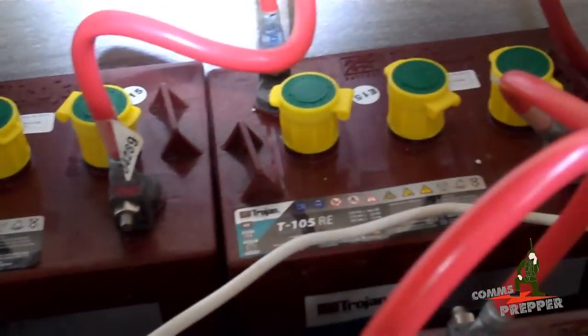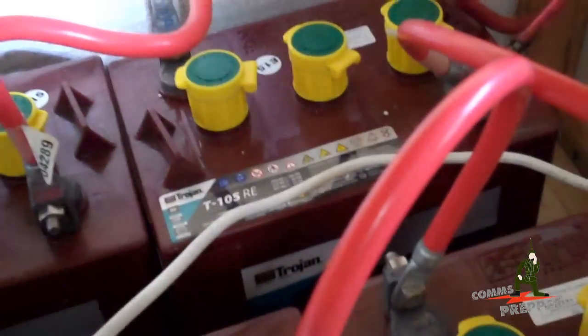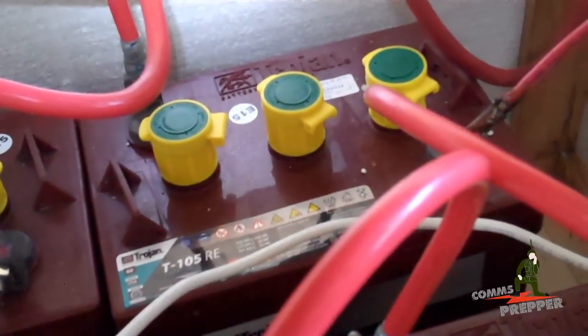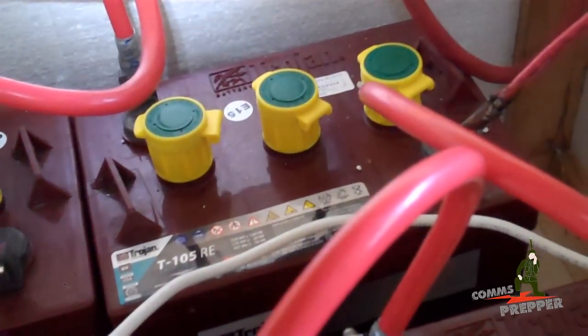Alright guys, I'm in the battery box and things are looking good. For those of you who don't follow the channel, what I have here are four Trojan T-105RE lead acid batteries. They're flooded batteries, so you have to do maintenance, you have to do equalization, and of course you have to at least check them out every couple of weeks.